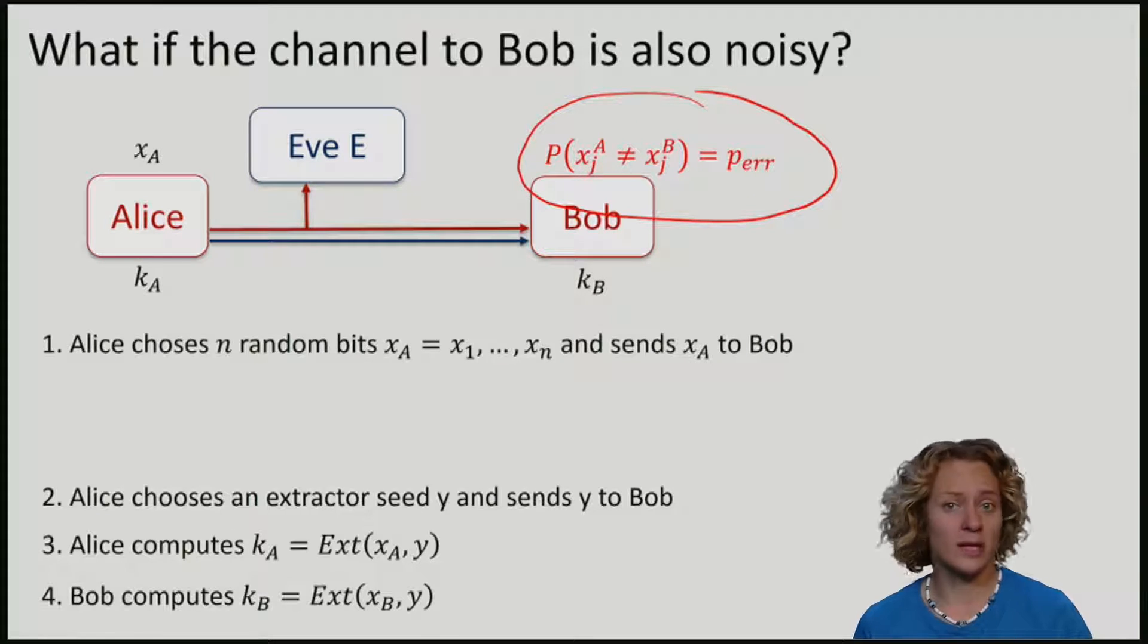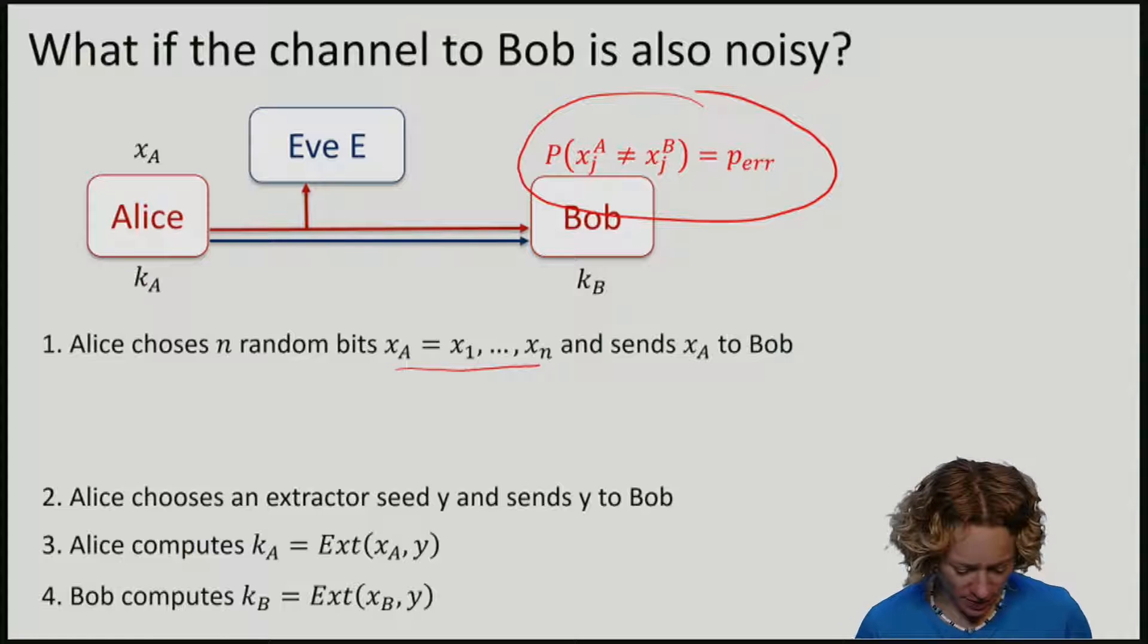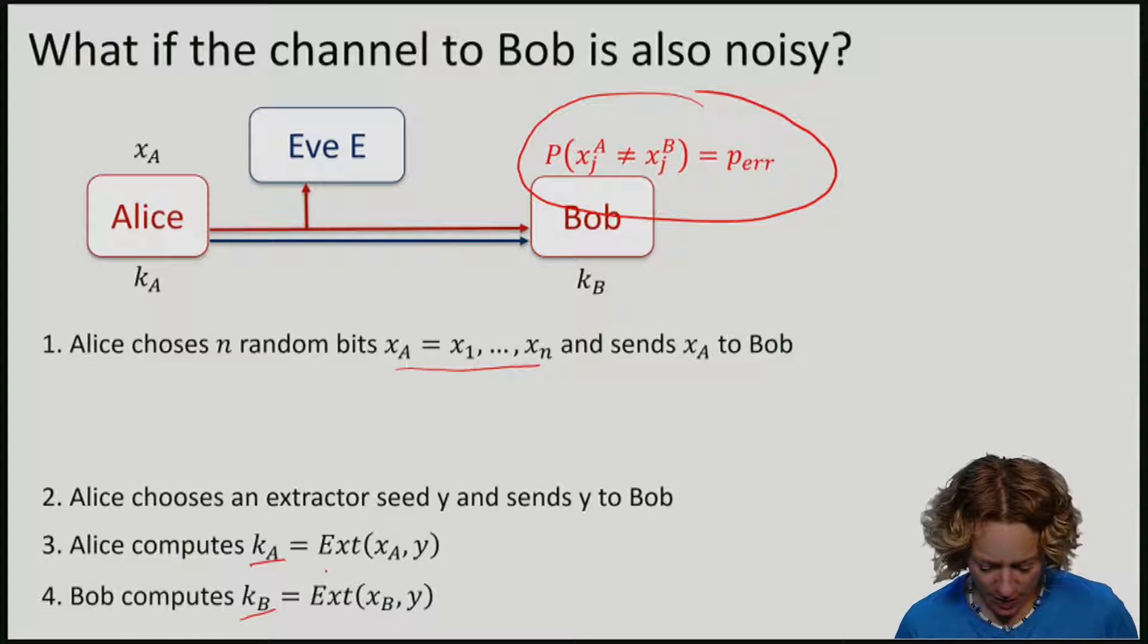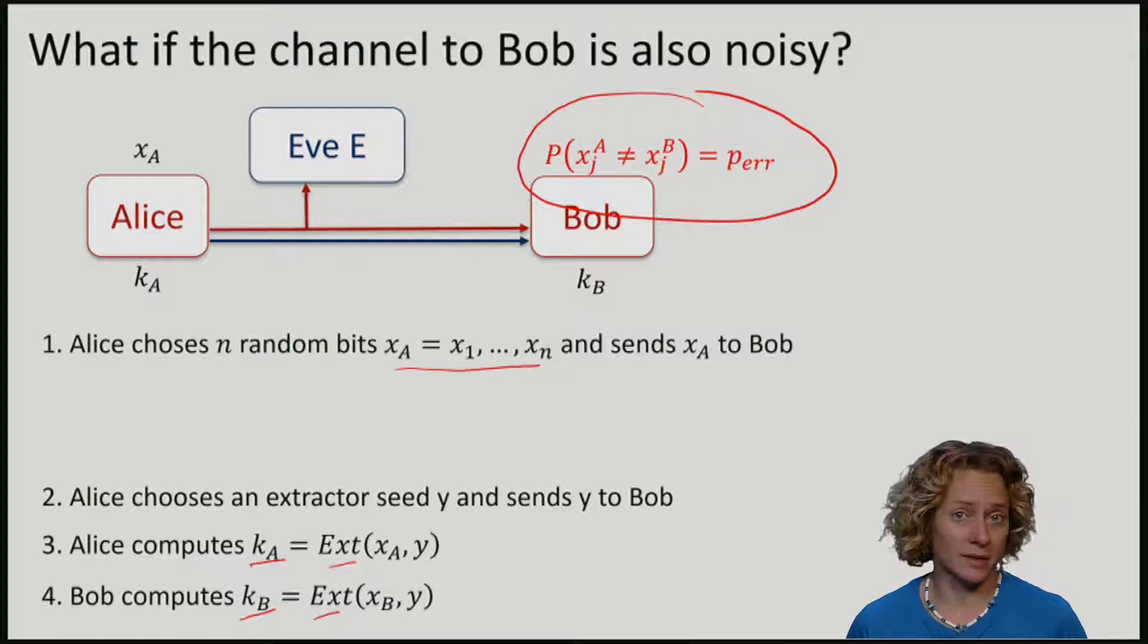Let's have a look at our protocol. Alice chooses random bits and she sends them to Bob. Previously we were sure that whatever Alice sends is exactly what Bob receives. This meant that if they later computed ka and kb by applying the extractor function, they would have obtained the same key.